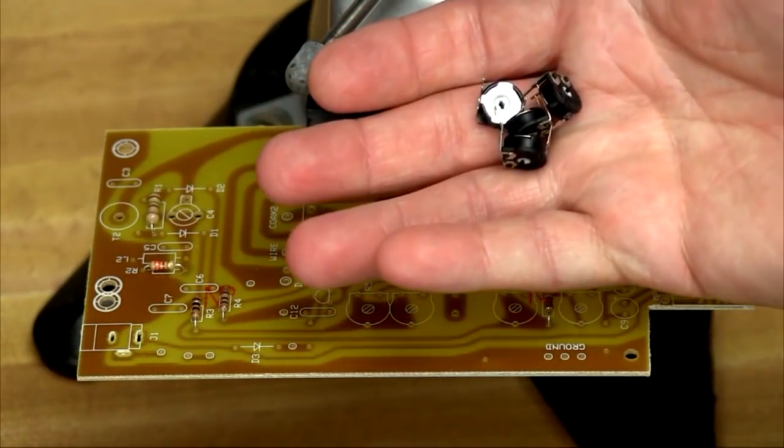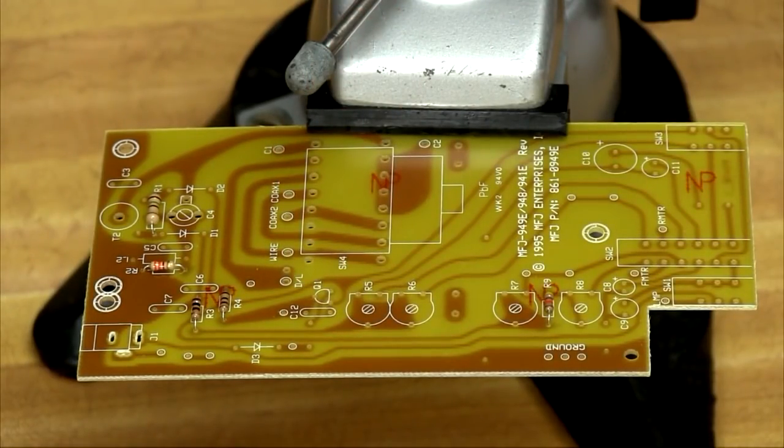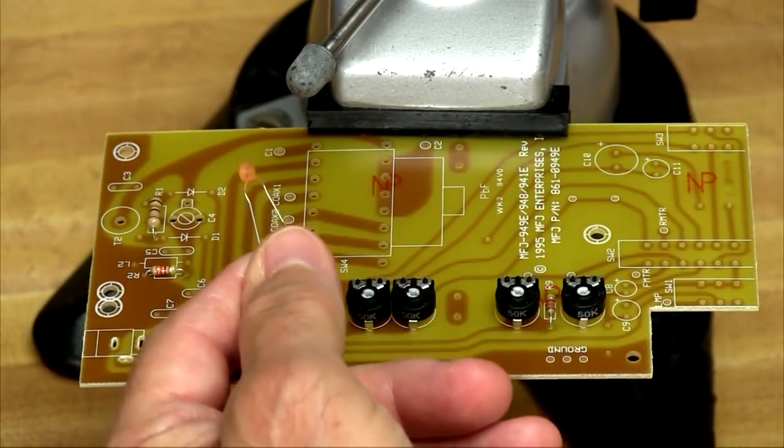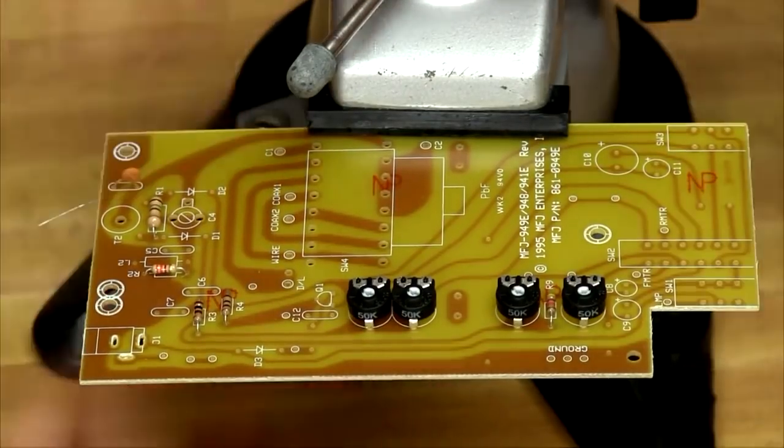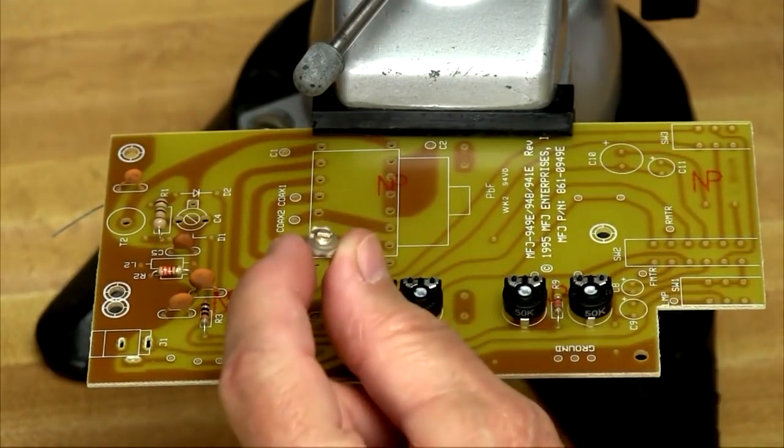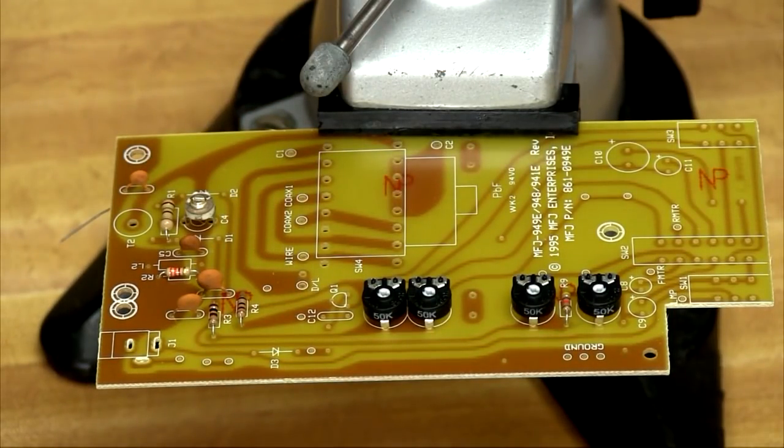So now we've got four 50K ohm trimmer pots and we're going to install those as our 5, 6, 7, and 8. Now we've got four ceramic disc capacitors to install. Now we'll find C4, which is a trimmer capacitor. Now let's solder all these in place before we move on.